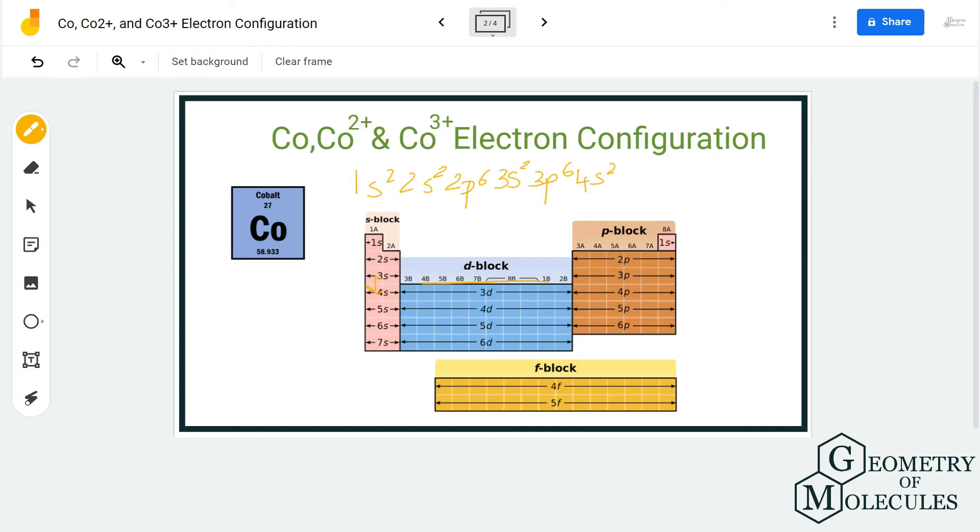The d orbital can take up to 10 electrons, but we only need 7 more, so we write 3d⁷. The total comes to 27 electrons. This is correct, but you can also switch the positions of 4s² and 3d⁷.